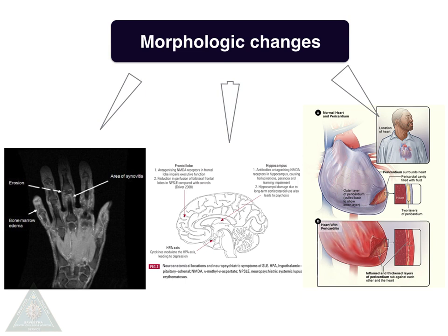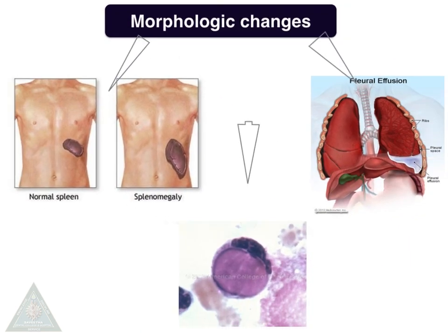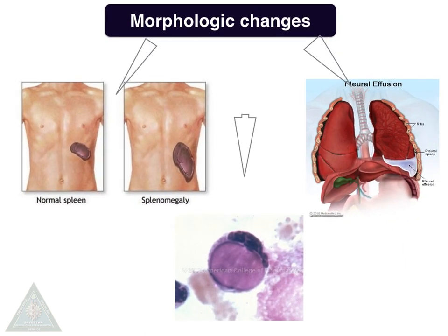Neuropsychiatric symptoms are ascribed to acute vasculitis. In the cardiovascular system, you can have pericarditis, myocarditis, and valvular involvement. Other organ involvement includes splenomegaly, and in the lungs, pleuritis and pleural effusion.